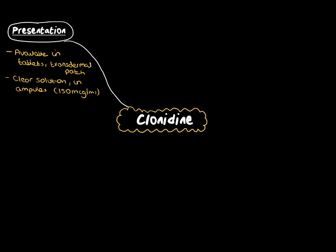One important thing to note about clonidine is that it is 50% renally excreted. Therefore, if you have a patient with renal failure or renal impairment, you have to be cautious with the use of clonidine to ensure that you don't overdose them and prolong the effects long after the time you wish to stop using it.